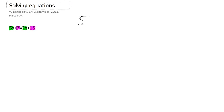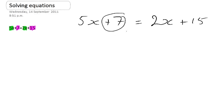So I've got 5x plus 7 equals 2x plus 15. Now, I'm going to talk about this as moving things over the equals, which is a little bit untidy, but it kind of works. When I move something across the equals, the sign attached to it changes.